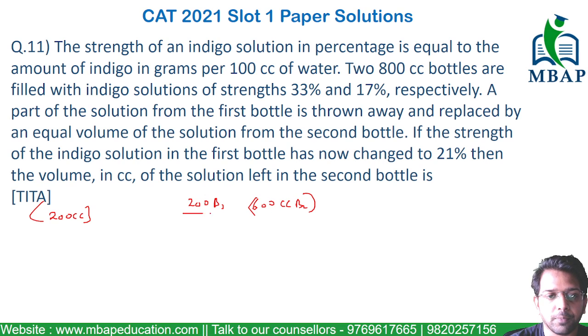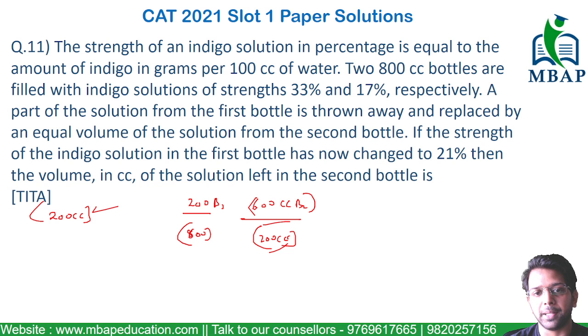What is left? In bottle 1, 600 cc is left and in bottle 2, only 200 cc is left. We are required to find the answer for bottle 2. The answer is 200 cc.